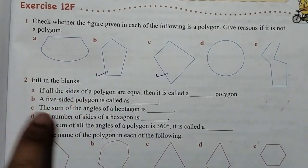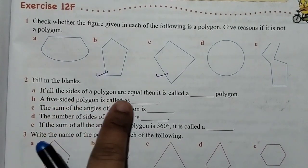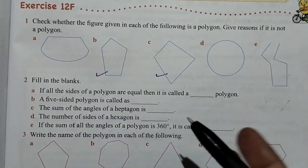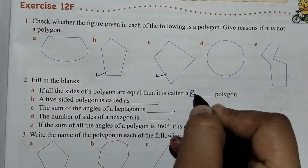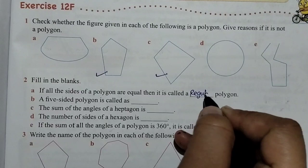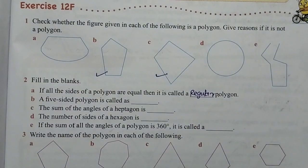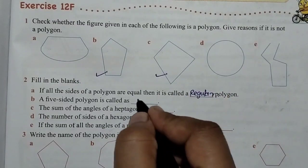Question number 2: Fill in the blanks. If all the sides of a polygon are equal, then it is called a regular polygon. A five-sided polygon is called pentagon.